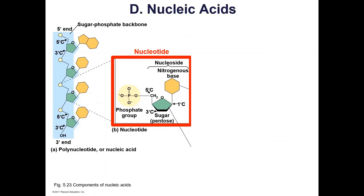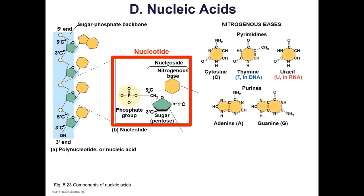You probably know that nitrogenous bases come in different varieties — the letters of the genetic code: A, C, G, and T, and U in RNA. So that's adenine, guanine, cytosine, thymine, and uracil. They're called nitrogenous bases because they contain lots of nitrogens. We also have pentose sugars — pent meaning five, so five carbons. There are two varieties: ribose and deoxyribose. Ribose has an OH group, while deoxyribose is missing that oxygen — deoxy literally means one less oxygen.